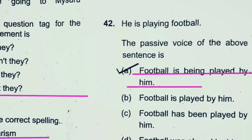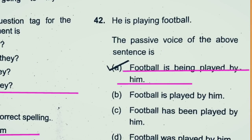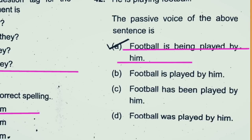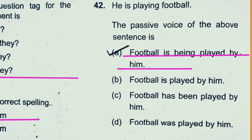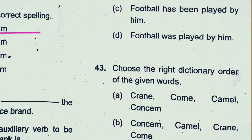Question 42: He is playing football. The passive voice — the sentence is in the present continuous. Football is the subject. Being is used in passive voice. 'Football is being played by him' — 'being' is added for the passive voice. That is the clue. So option A is the right answer.